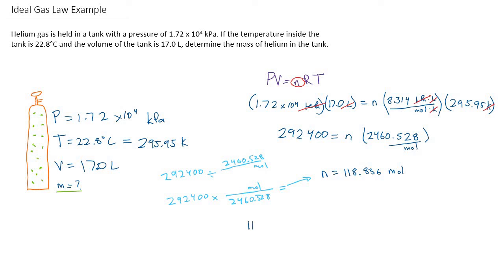Let's just take our 118.836 moles and find out the number of grams by doing some unit cancellation here. If we multiply by the grams per mole, then we will be able to cancel out those moles.